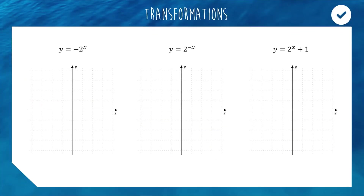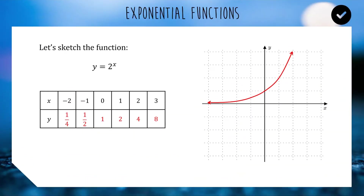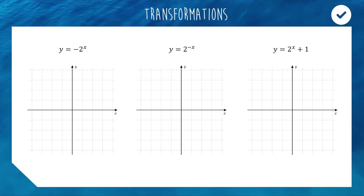Now that we know what 2 to the x looks like, we're going to sketch: negative 2 to the x, 2 to the negative x, and 2 to the x plus 1. I encourage you to open Desmos on your computer — put in 2 to the power of x and play around with the base, maybe try 5 or 0.5. Change the input, maybe make it 2x or half x, and see what changing the equation does to the graph to get a better understanding of what's happening.